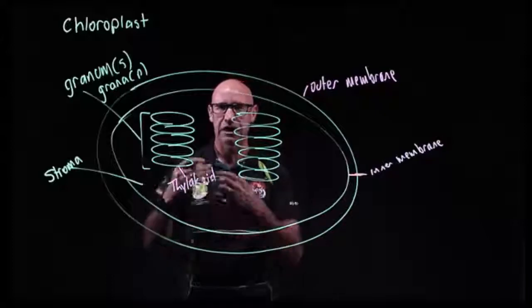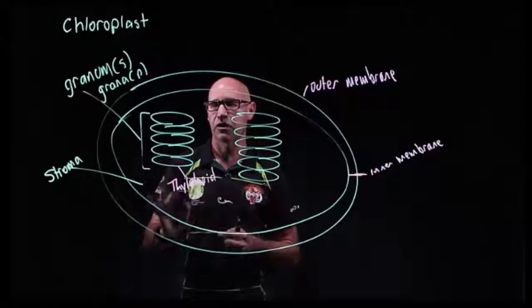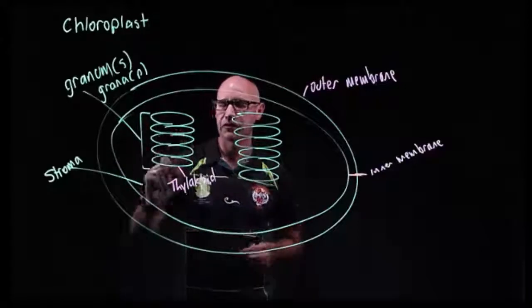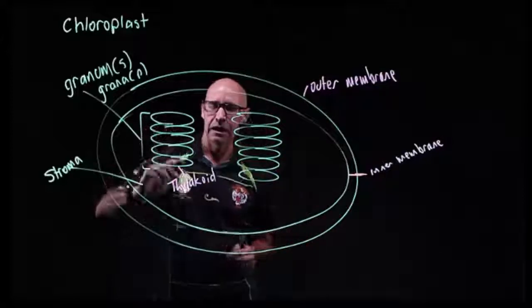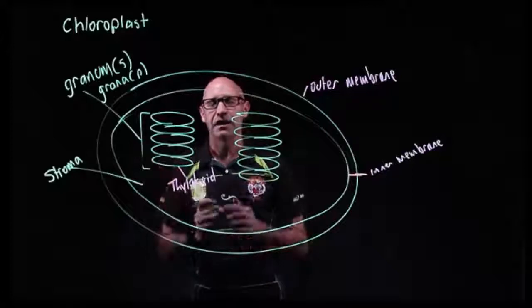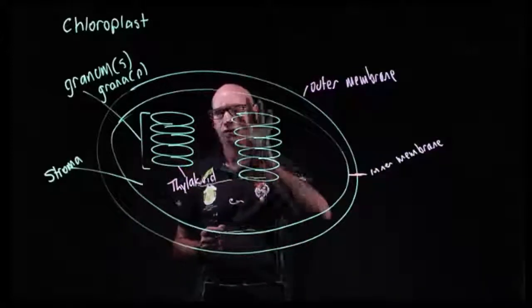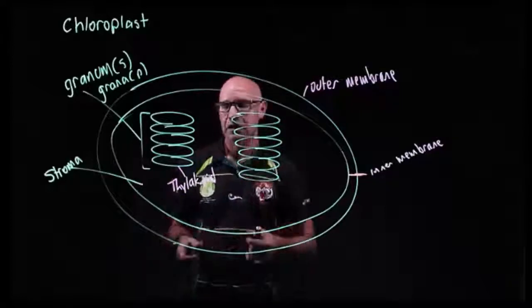So the first part of photosynthesis occurs in the grana, specifically on the thylakoid space or the thylakoid membrane, and then the second half of photosynthesis occurs in the stroma.